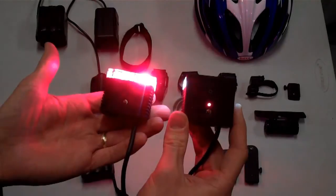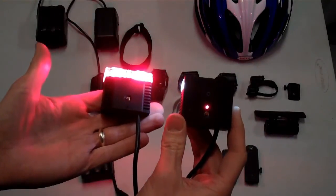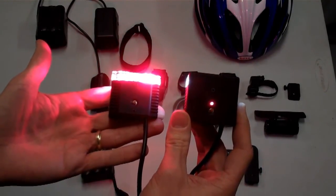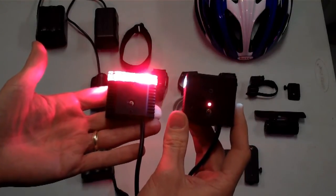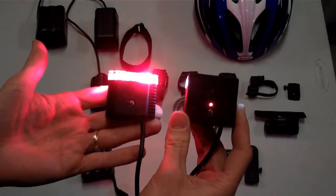And what you see on the taillight is that for the first minute or so, it's going to flash once. That's telling me that it's below 50%.